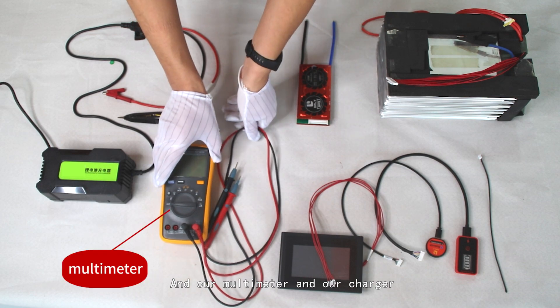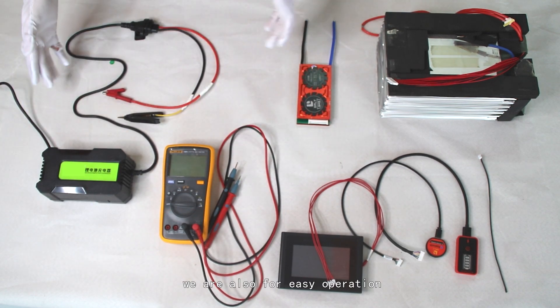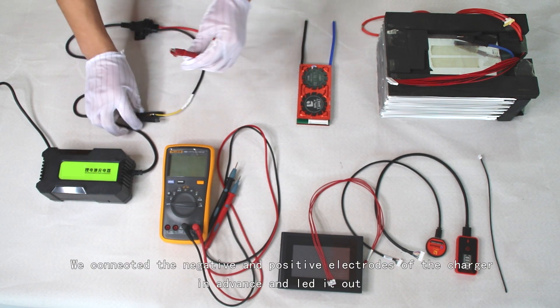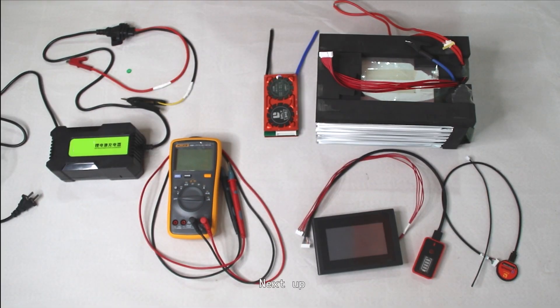Here is the total positive electrode of the battery pack, temperature control line, power board, Bluetooth, and our BMS touch screen, multimeter, and charger. For easy operation, the charger has the negative and positive electrodes connected in advance and laid out.